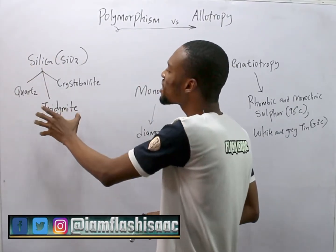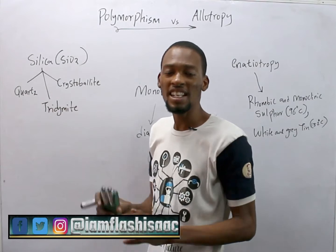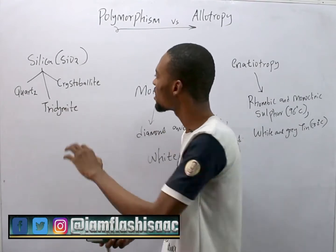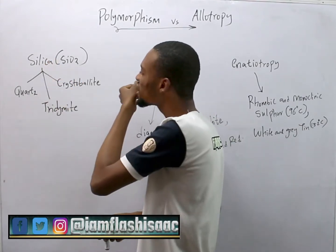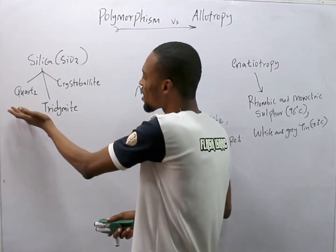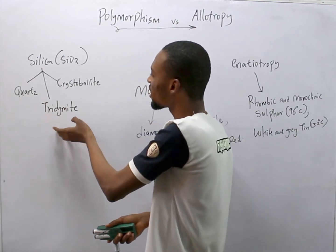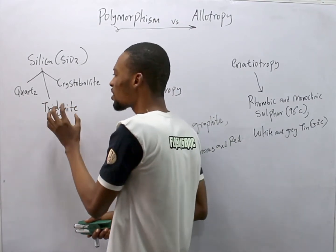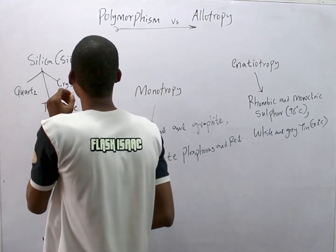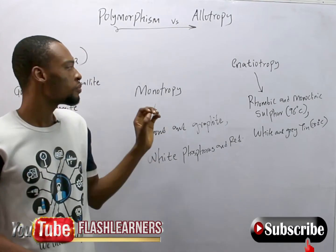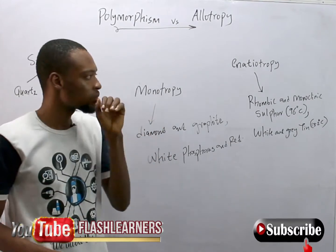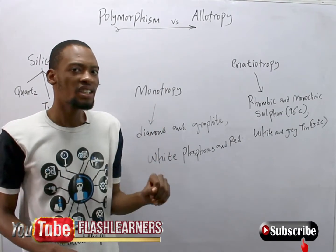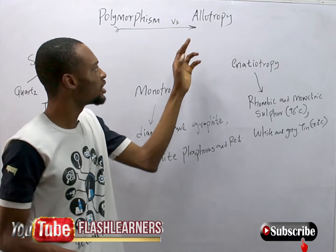Silica can exist under the same physical state in the form of quartz, tridymite, and cristobalite. That process is referred to as polymorphism, but it is not allotropy.